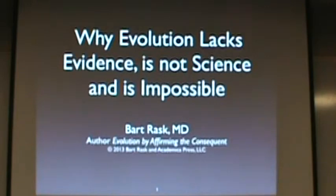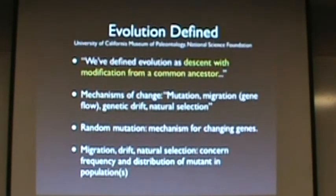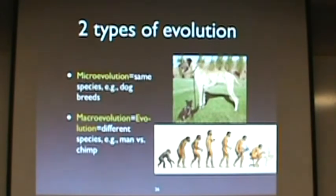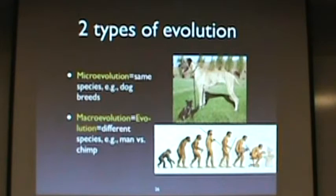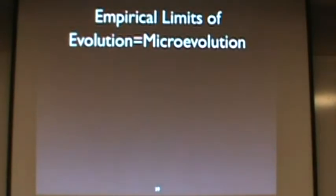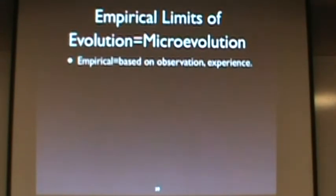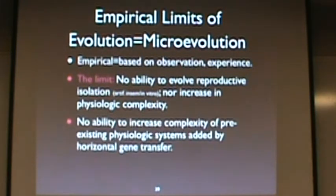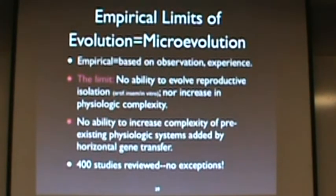I'm going to talk about why I don't believe in evolution. Evolution, as defined by the National Science Foundation, is modification with descent from a common ancestor. The mechanism of change is mutation, migration, and genetic drift — of these, mutation is the mechanism for changing genes. I believe in microevolution — changes within a kind — but I do not believe that one species could give rise to a physiologically different species. There are empirical limits to evolution based on observation and experience: there's no ability to evolve reproductive isolation, nor an increase in physiologic complexity, nor an ability to increase complexity of pre-existing physiologic systems. In my review of over 400 studies, there are no exceptions to these limits.